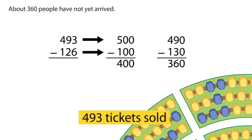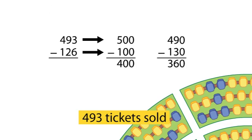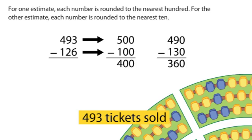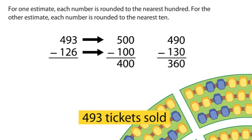About 360 people have not yet arrived. Why are the estimates different? For one estimate, each number is rounded to the nearest hundred. For the other estimate, each number is rounded to the nearest 10.